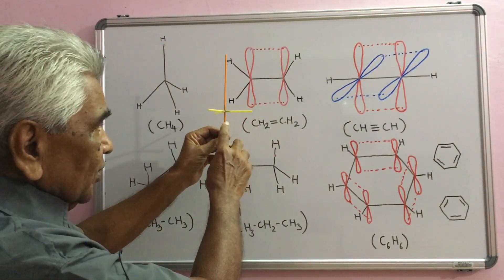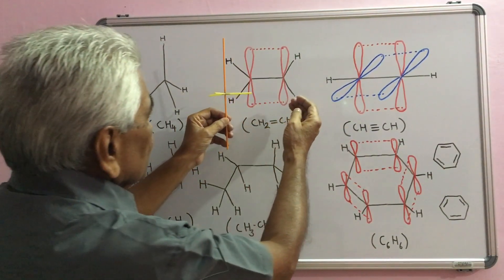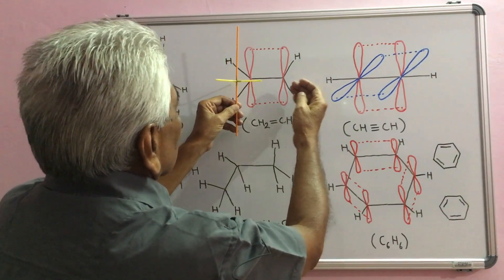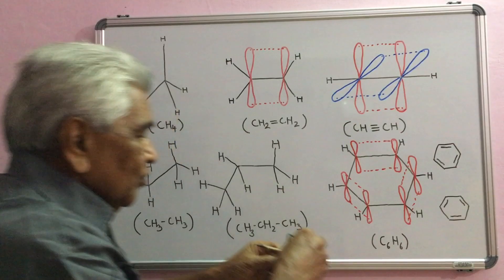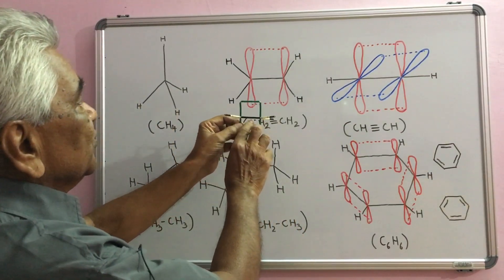When this carbon atom comes in close proximity with another such carbon atom, the overlap takes place forming a C-C bond.